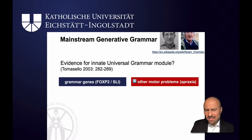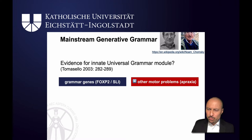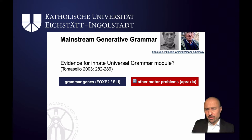As it turns out, however, people who suffer from specific language impairment also have other motor problems. This is called apraxia. So also the planning of motor action and the planning of speech is impacted — and that's not purely universal grammar, that's not purely grammar at all. So this is a piece of evidence that goes against the claim that language is innate.